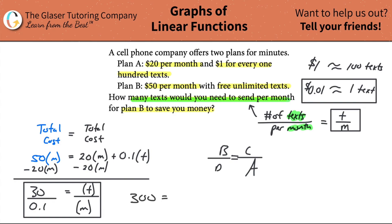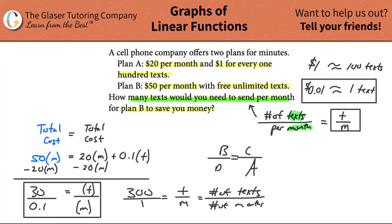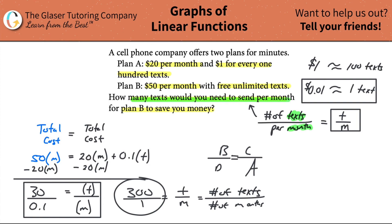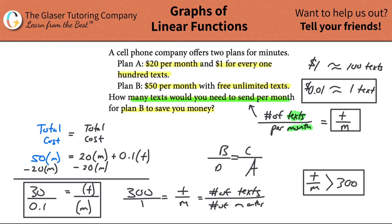Doing 30 divided by 0.01 in the calculator gives you 300. So t over m equals 300, meaning 300 texts per month. That's proportionally 300 texts over 1 month — texts per month. So if 300 texts per month is where you're indifferent — where the cost of Plan A equals the cost of Plan B — then anything over 300 texts per month is when Plan B would save you money. If t over m is greater than 300, go with Plan B.